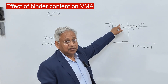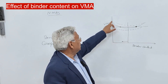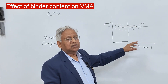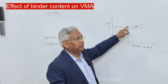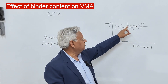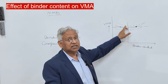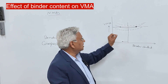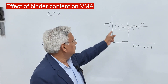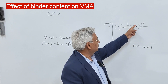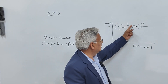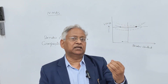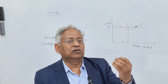This is the desirable graph between VMA and binder content. Try to take the final binder content slightly on the wet side of the minimum point of this curve — not much, very slightly — because this U-shaped curve is very flat in that region. Therefore, if you slightly change the binder content, VMA will not change significantly.